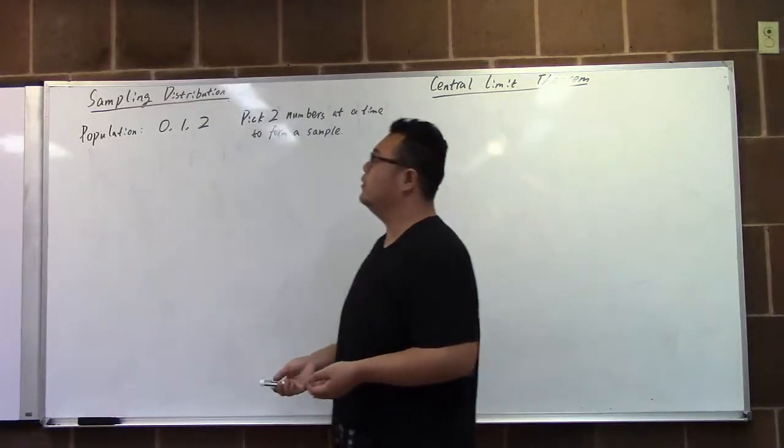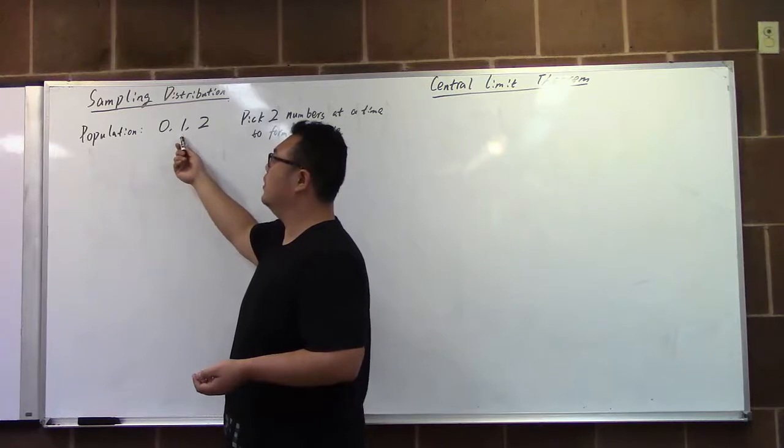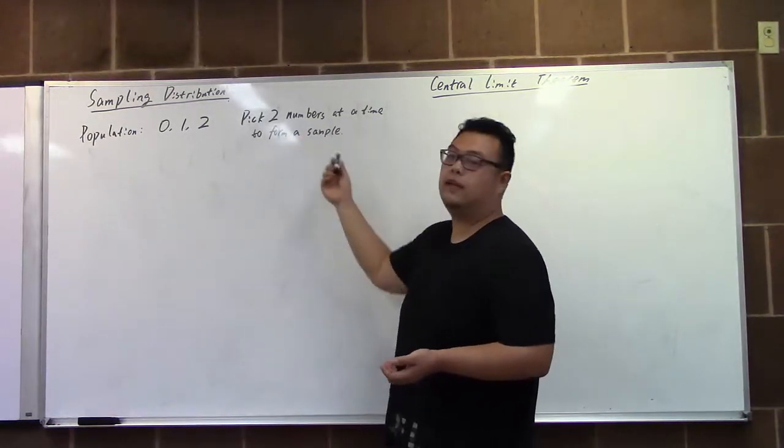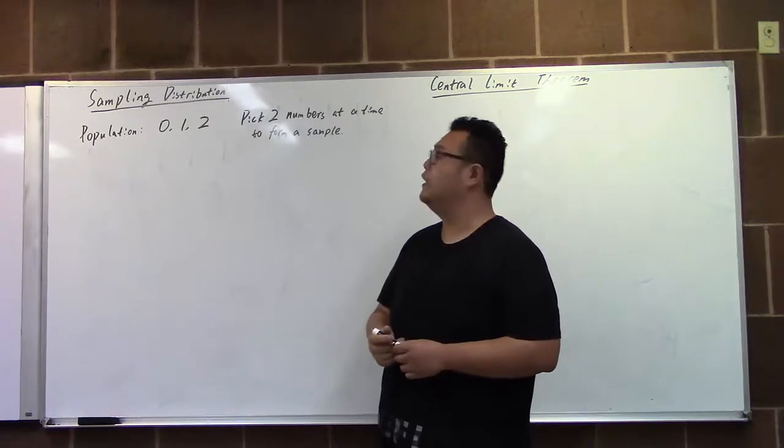For example, we have the population of 0, 1, and 2. Then to pick two numbers at a time to form a sample.